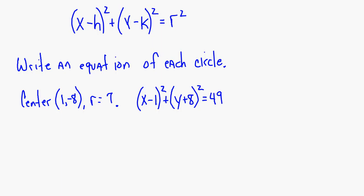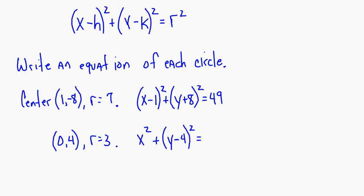For a center at (0, 4) with radius equal to 3: your equation is X squared — because X squared is the same as X minus zero squared, you don't write the minus zero part — plus (Y minus 4) squared equals the radius squared, which is 3 squared, so 9.